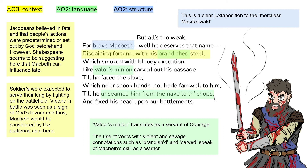The use of verbs with violent and savage connotations, such as 'brandished' and 'carved,' speak of Macbeth's skill as a warrior, but also foreshadow his ability to kill in a reckless and gruesome way. Additionally, Macbeth does not simply kill Macdonald — he 'unseamed him from the nave to the chops.' Shakespeare uses brutal and gory imagery, suggesting Macbeth literally cuts Macdonald in two from the nave, or stomach, to the chops, meaning chin — a description which not only represents Macbeth as a skilled fighter, but also a brutal and bloody one.